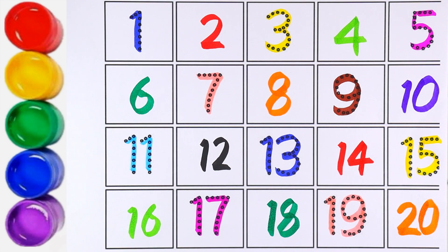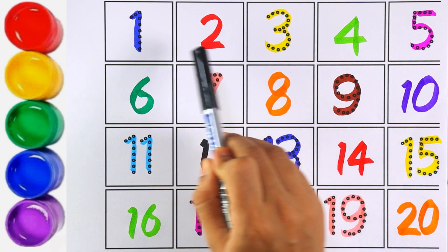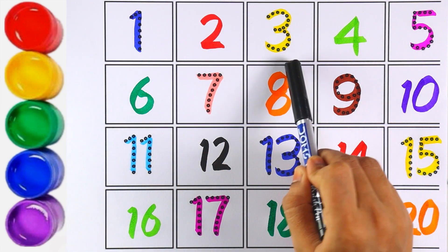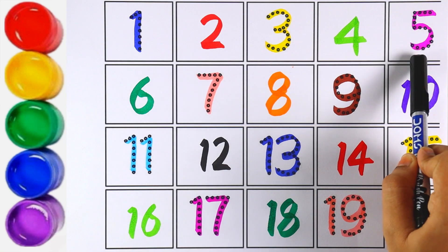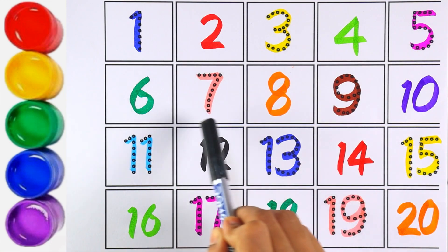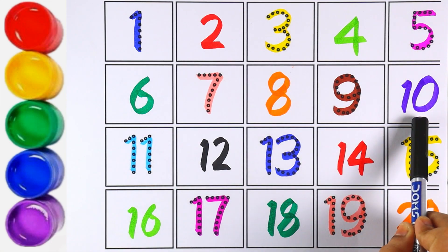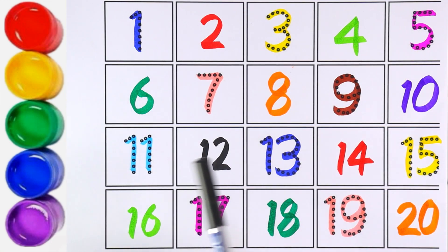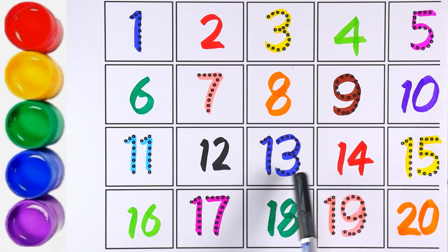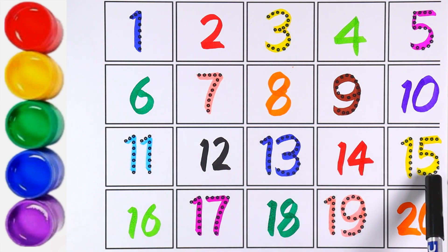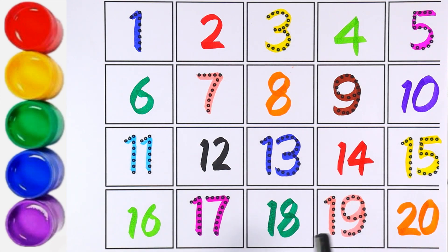Now let's count from one to twenty: 1, 2, 3, 4, 5, 6, 7, 8, 9, 10, 11, 12, 13, 14, 15, 16, 17, 18, 19, 20.